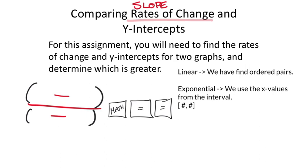We're not looking at negatives or positives—you can ignore negatives if you see any. Just look for whichever number is bigger than the other one. Its location on a number line isn't important; the one farthest from zero would be the most appropriate answer—you could look at it as absolute values.